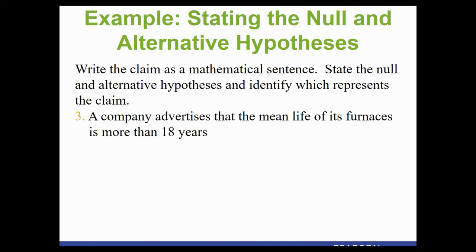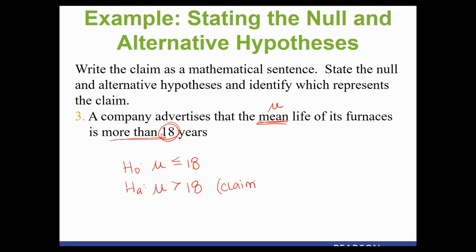Example three: a company advertises that the mean life of its furnaces is more than 18 years. We use mu; comparing to 18. 'More than' is the greater than symbol — an inequality — so it goes in Hₐ. The complement, less than or equal, goes in H₀. Because greater than comes directly from the wording of the problem, the claim is the alternative hypothesis, Hₐ. We identify the claim early because it will come back in our conclusion sentence.